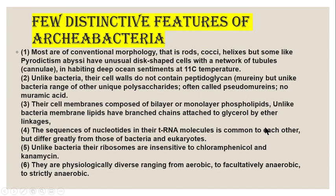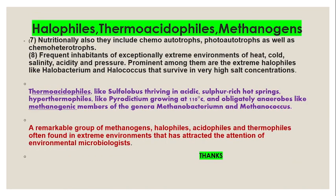Some distinctive features of Archibacteria: their cell wall does not contain peptidoglycan; the sequence of rRNA is common among themselves but differs from those of bacteria and eukaryotes; and ribosomes are insensitive to chloramphenicol. The three groups are halophiles, thermoacidophiles, and methanogens. Examples include Sulfolobus bacteria which thrives in acidic medium, methanogenic members such as Methanobacterium and Methanococcus, and hyperthermophiles like Pyrodictium growing at 110 degrees centigrade as an obligatory anaerobic form.